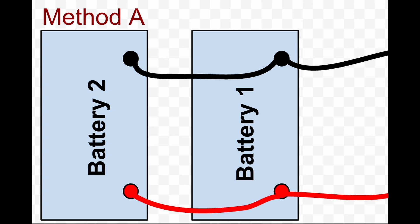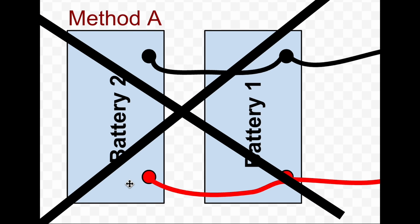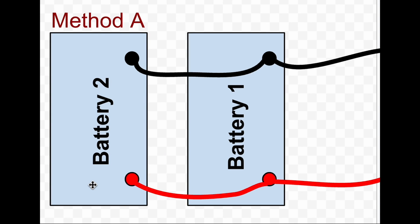The positive cable also goes from battery 2 to battery 1, then to the source. The problem with this is that it causes more resistance in battery 1 than in battery 2.